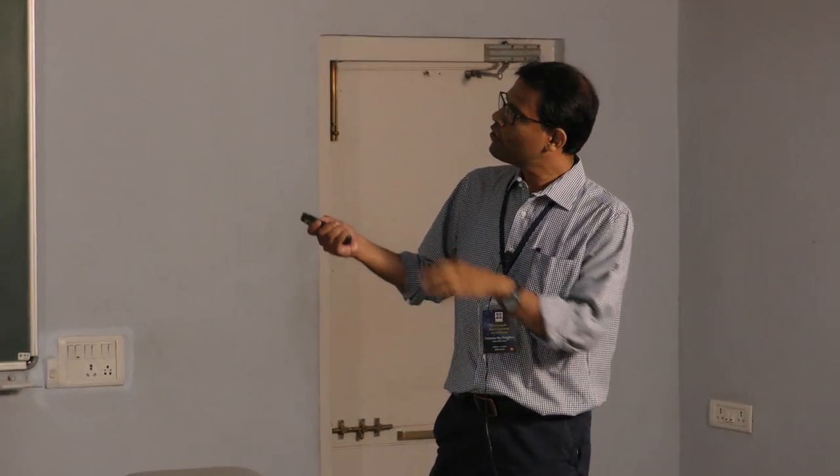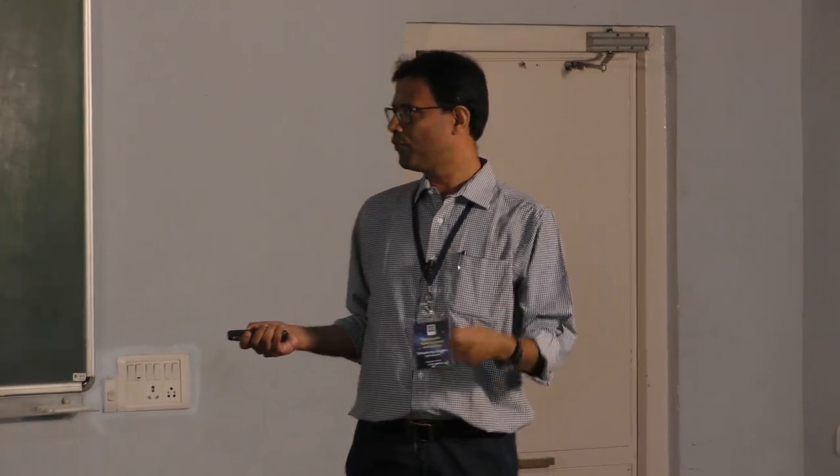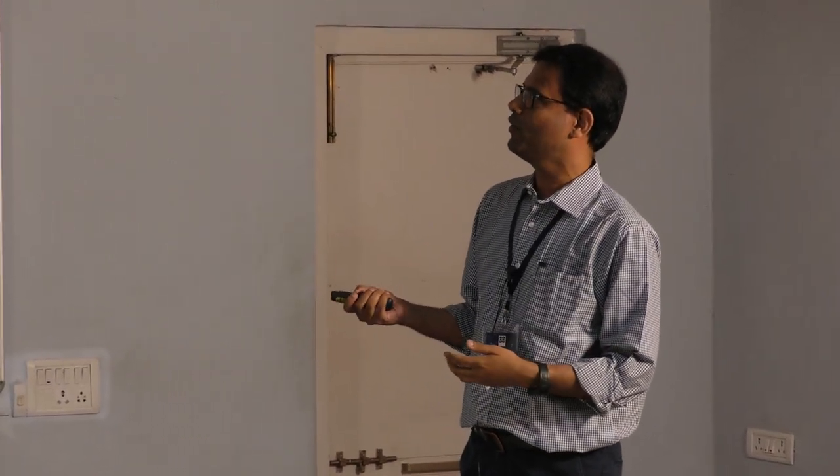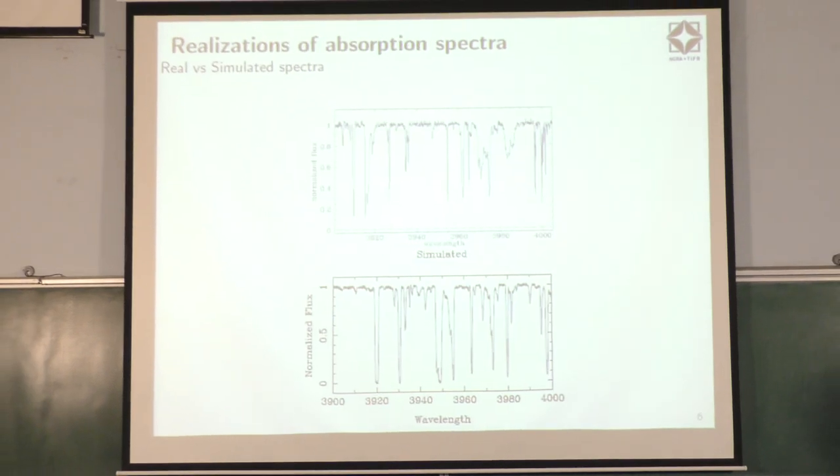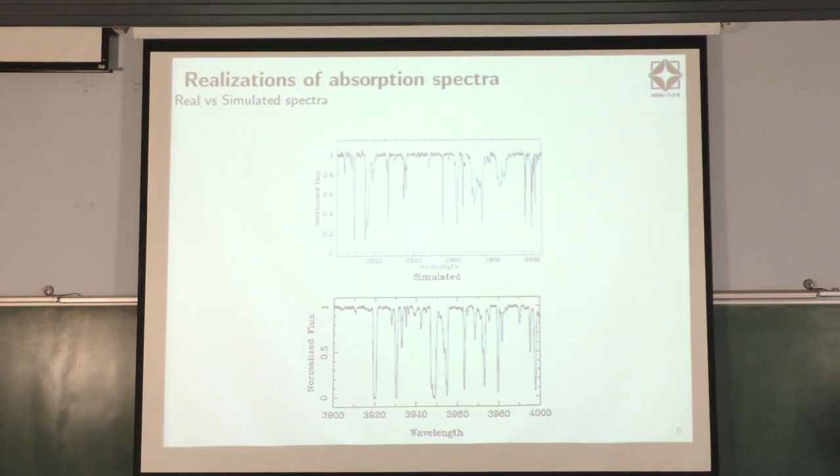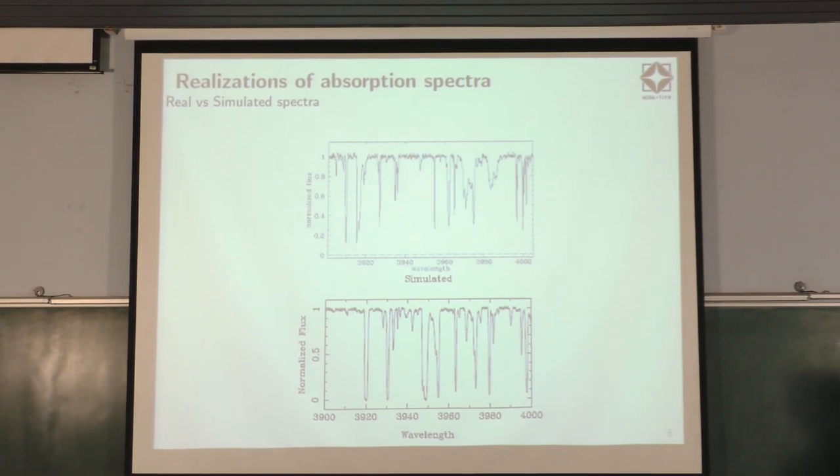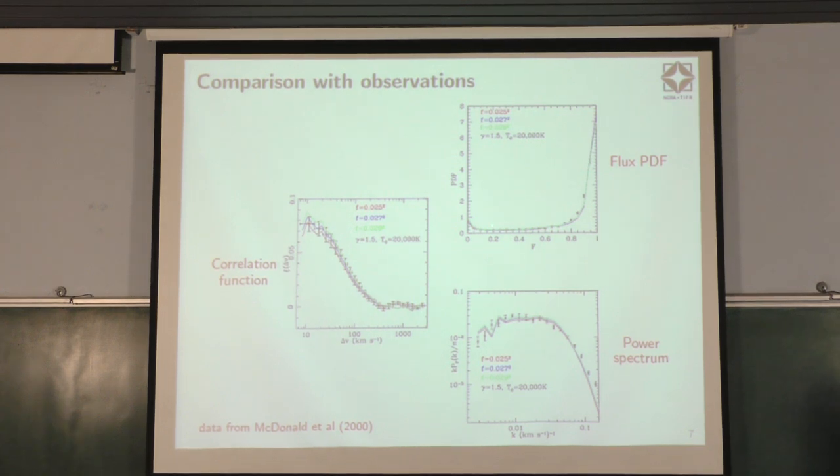Once we get the neutral hydrogen density field, then you can predict everything which you want. Parallelly with the linear density field, you also keep track of the velocity field, which goes into the calculations. This is something which we did with Paddy and Sriana, who is also here. Just to show you, these are real realizations. You can make realizations of the dark matter density field, the linear one, go through the whole process, you will get some realizations of the absorption spectra. You can qualitatively see that they look very similar. This is observed spectra, and this is one which is simulated. You can see that qualitatively they look very similar. You can just go ahead and start to compare with various observational data which we had access to at those years. We could match the flux PDF, the power spectrum and the correlation all simultaneously.